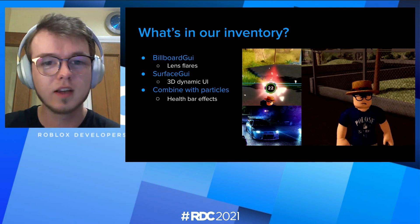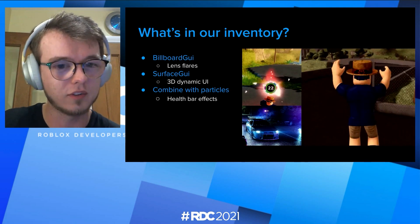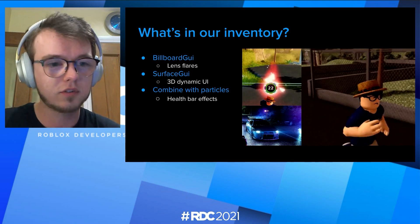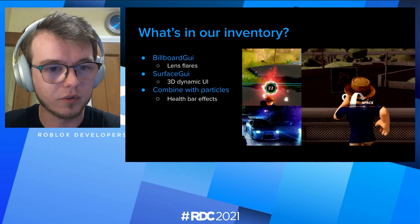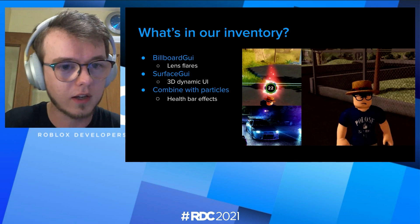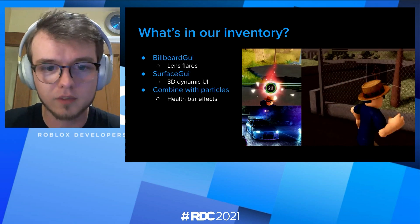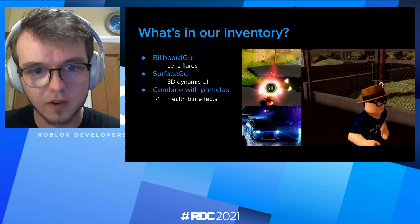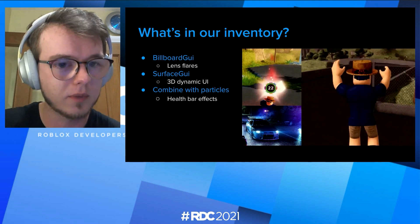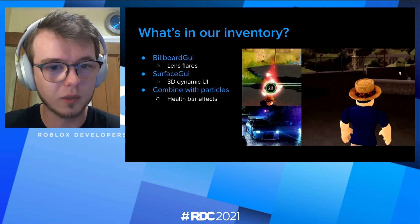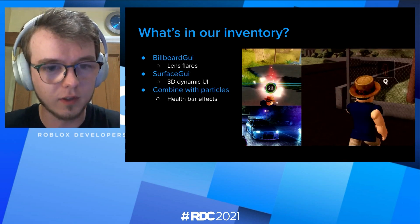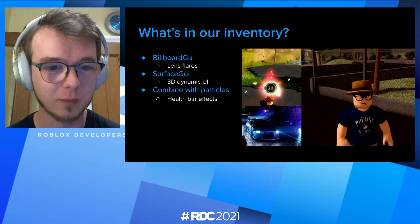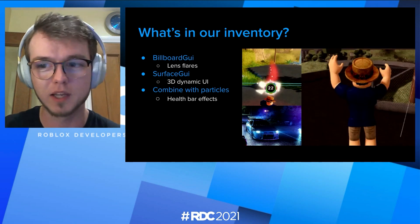We also have billboard GUIs — 2D images in a 3D point in space. Generally they are static, so they're great for lens flares, especially with the new brightness property, which really allows them to sort of emit light. And surface GUIs — we're also using beams there for UX for a cover system. And combining things like billboard GUIs with particles: the GIF in the top left shows a creative solution for a health bar where, when the player is damaged, it emits particles to really let the player know what's going on.